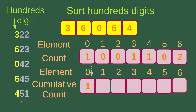Finally, we have one more step to go, which is handling the hundreds digits. You can see that the hundreds digits are highlighted in yellow and put on the unsorted list. I still need to make use of the counting sort process to sort the order of the hundreds digits. For element number 0, I have 1 zero. For element number 1, I have no 1s. Also no 2s, but I have 1 three, 1 four, 2 sixes, and no 5s.